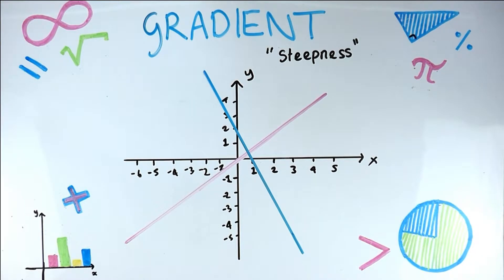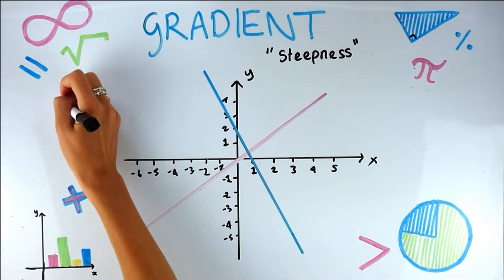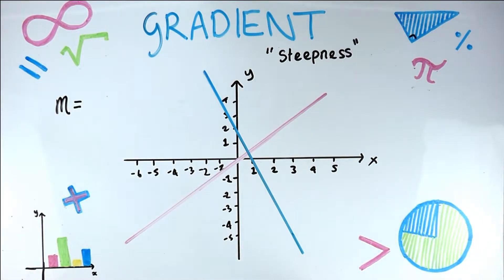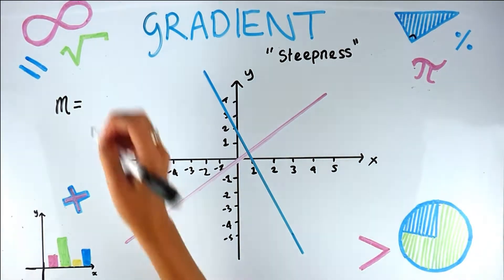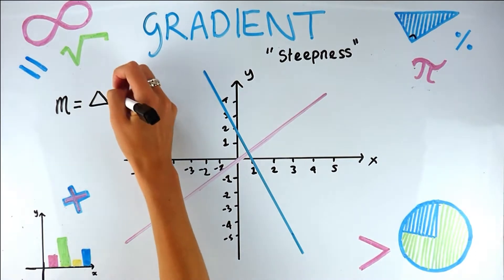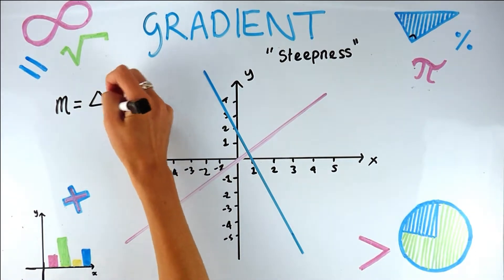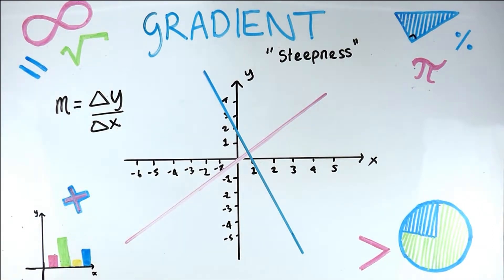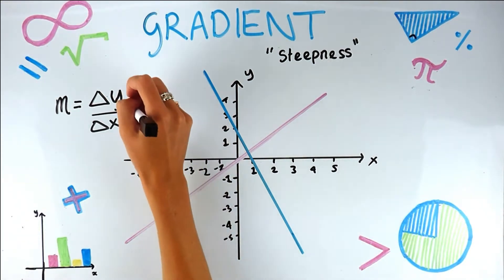What's the mathematical formula for gradient? I'm going to call gradient m — m means gradient. I'm now going to write some symbols you probably haven't seen before: triangle y over triangle x. That triangle stands for delta, so that's delta y over delta x, and that means change in y over change in x.